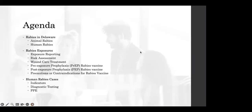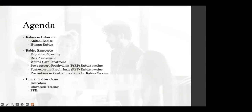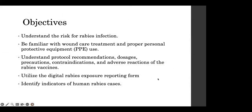So this morning, we're going to be talking about animal and human rabies and rabies exposures, what that looks like, wound care, pre-exposure and post-exposure prophylaxis, and indicators, diagnostic testing, and PPE for human rabies cases. Our objectives today are to understand the risks, become familiar, understand protocol recommendations, utilize our digital rabies exposure reporting form, and identifying indicators of human rabies cases.